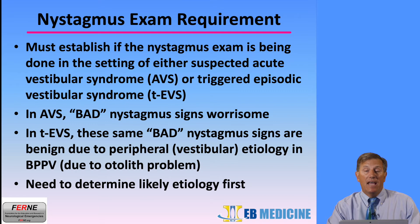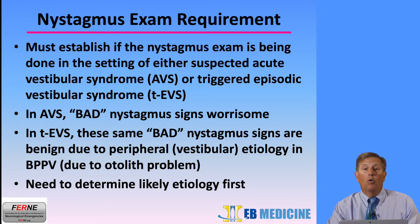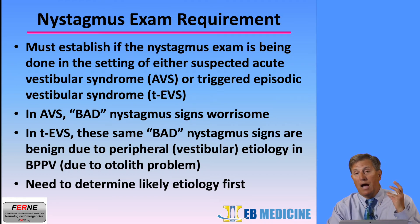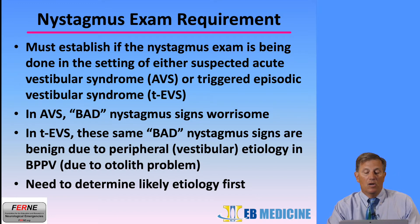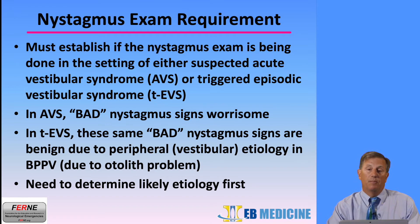In AVS or acute vestibular syndrome, the bad nystagmus signs are worrisome. In triggered episodic vestibular syndrome, the same bad nystagmus signs are benign, or more likely benign, due to peripheral vestibular etiology in BPPV, which is due to an otolith problem in the semicircular canals. Before determining your nystagmus exam interpretation, you need to determine the likely etiology first and examine in the setting of AVS or triggered episodic vestibular syndrome.